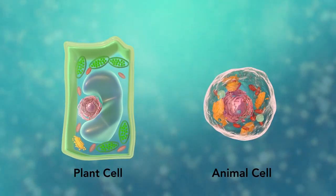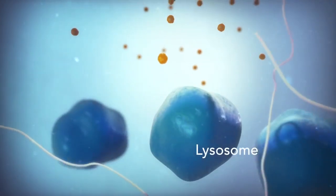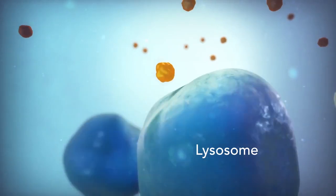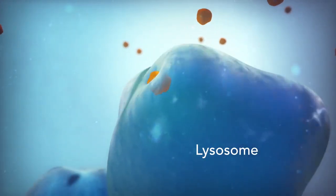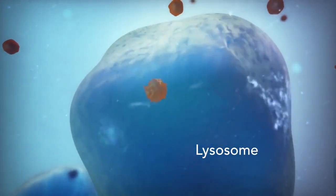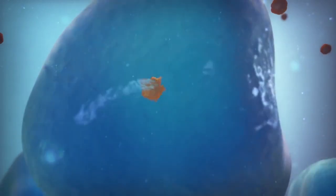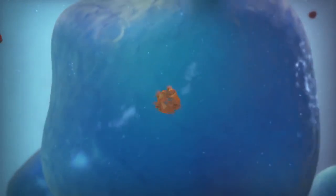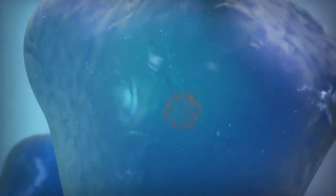Going back to the animal cell, you will see an organelle called a lysosome. Lysosomes are the garbage collectors that take in damaged or worn-out cell parts. They are filled with enzymes that break down this cellular debris.